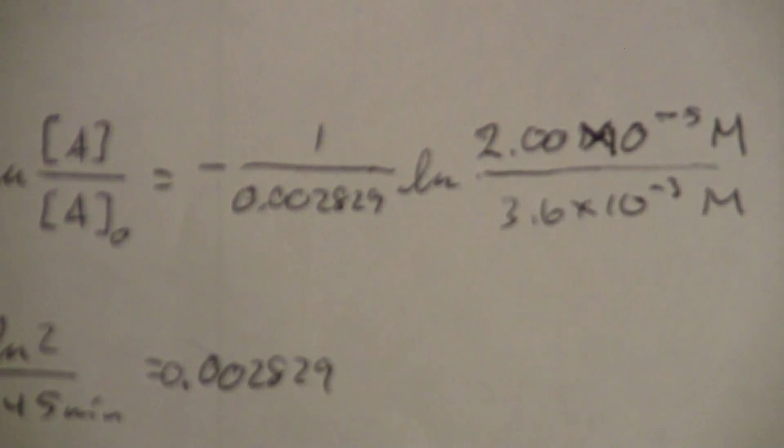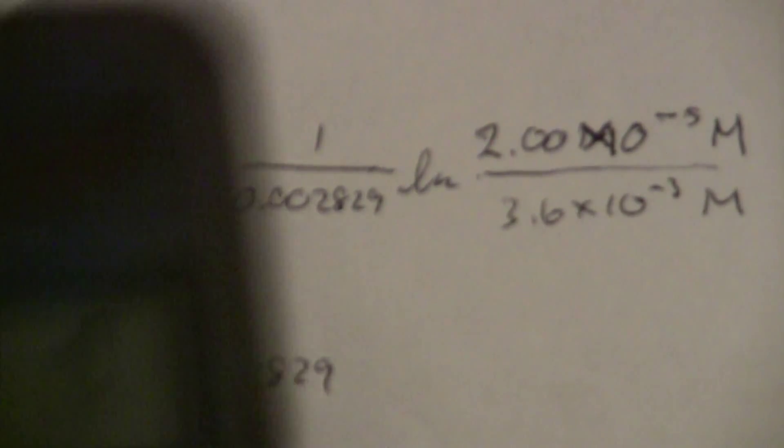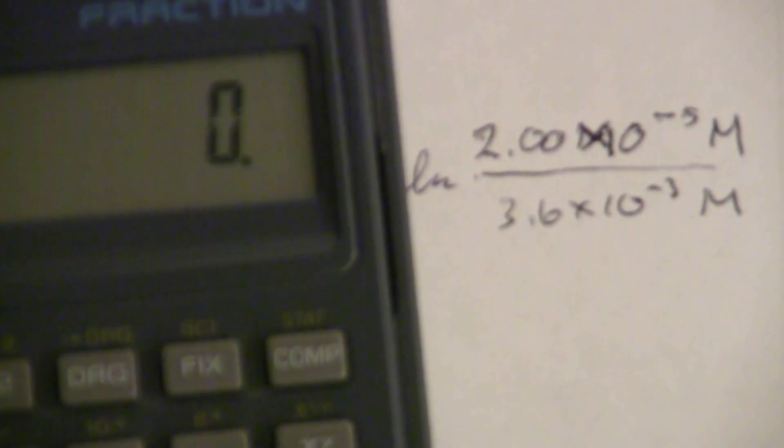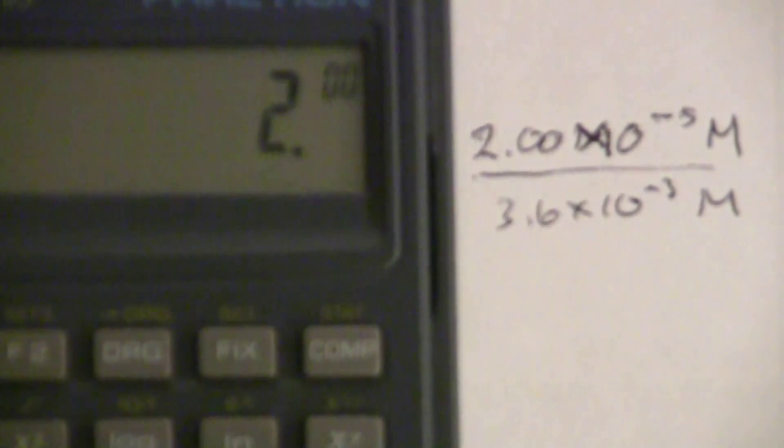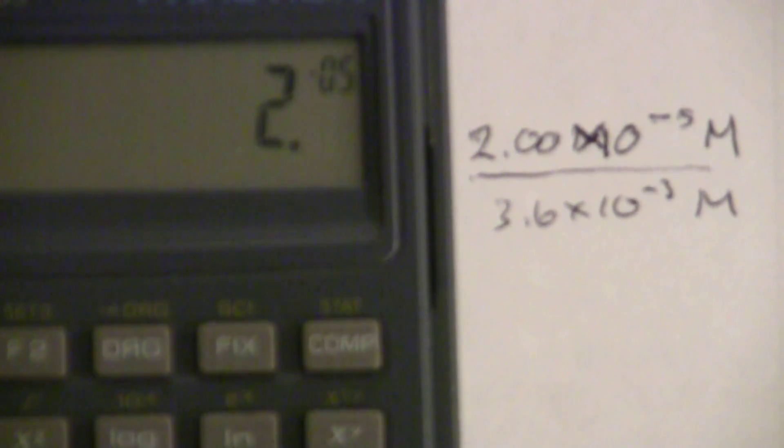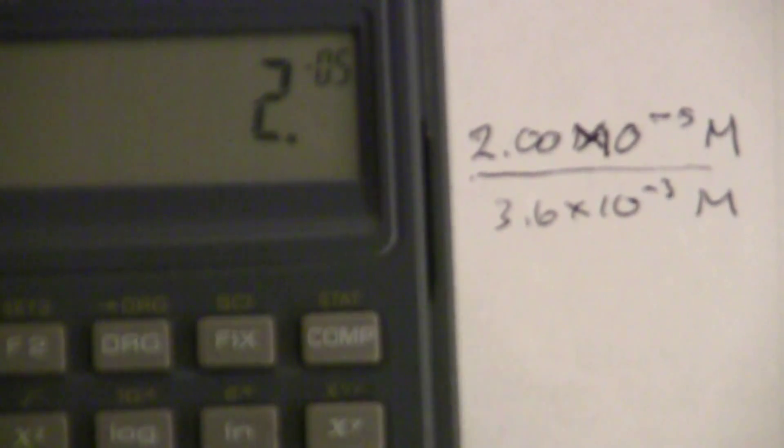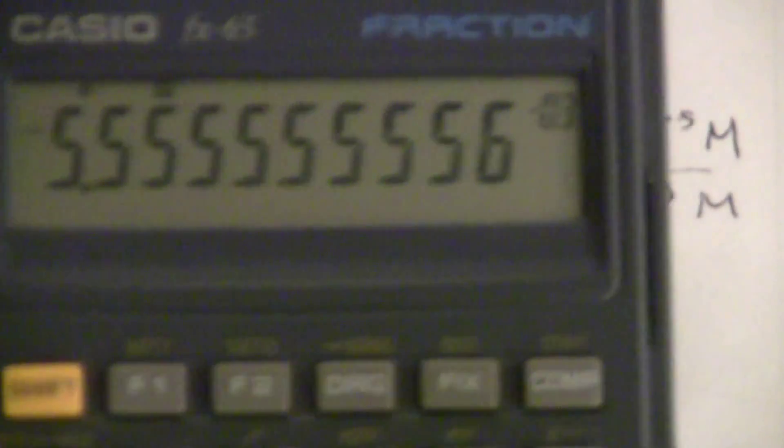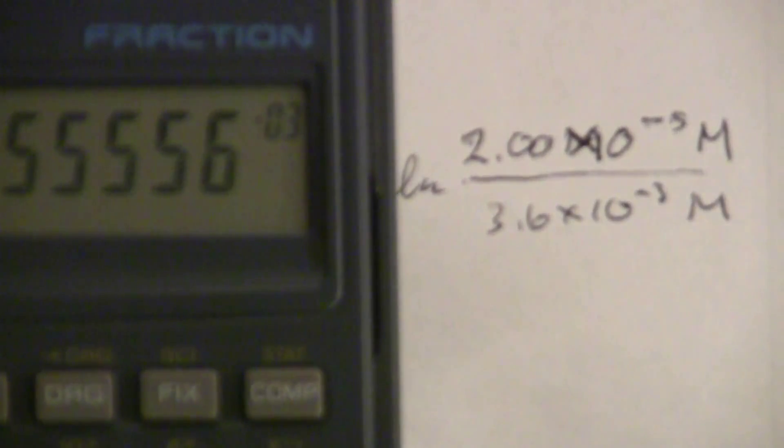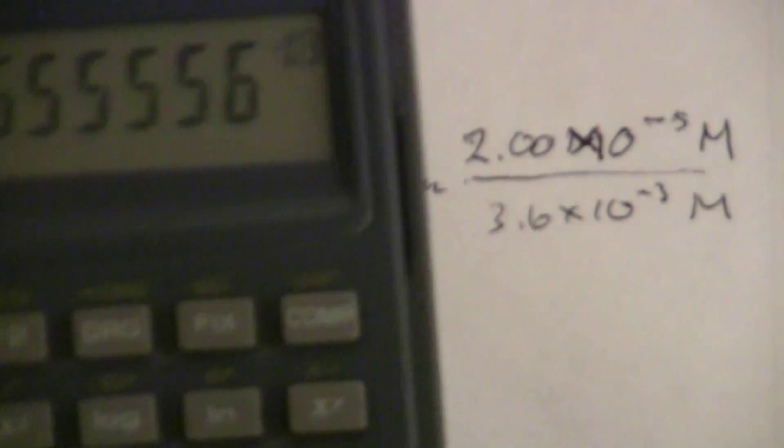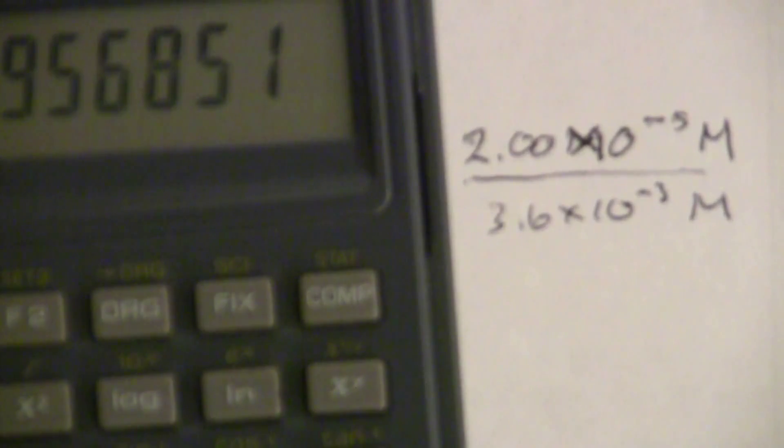So, we divide this, we have 2 exponent negative 5, divided by 3.6 exponent negative 3, equals, and we have 5.55 times 10 to the minus 3, but I want the natural log of that.